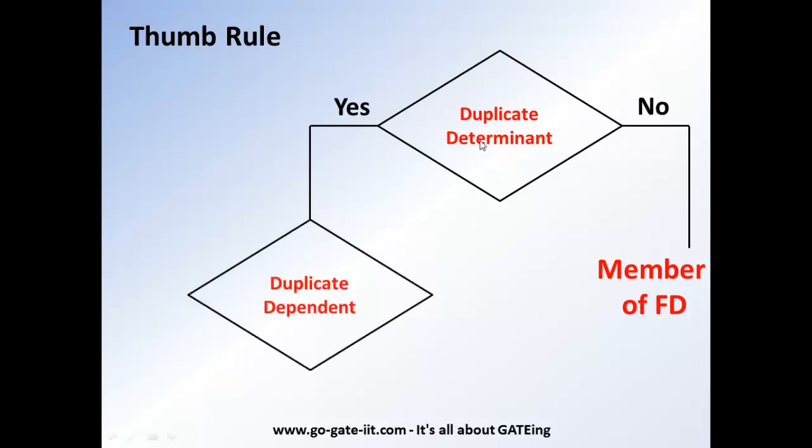If it is a duplicate determinant, then our next step will be we have to check on the dependent. The dependent, if it is a duplicate and if it is not duplicate, again two cases. If it is not duplicated, then that complete functional dependent set is not a member of the given relation.